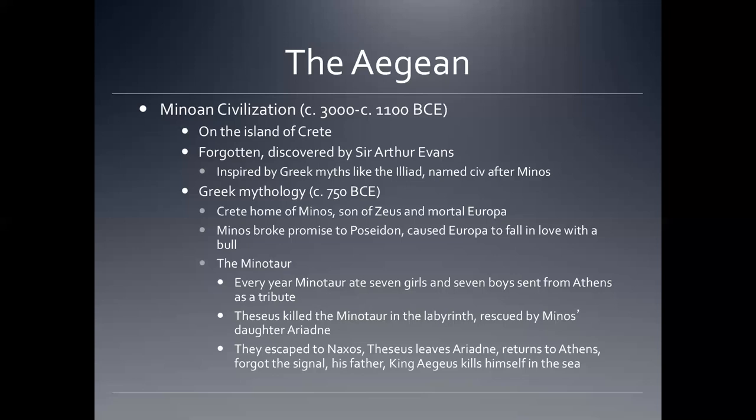His father, King Aegeus, sees that the signal isn't there and assumes his son was killed by the Minotaur, so he throws himself into the sea. The moral of this story is: don't mess with Poseidon. Evans was inspired by this story and named the culture he found on Crete after it, though again we don't know what they called themselves.